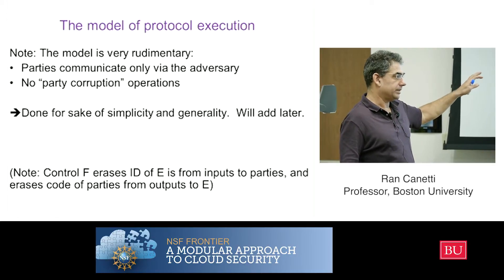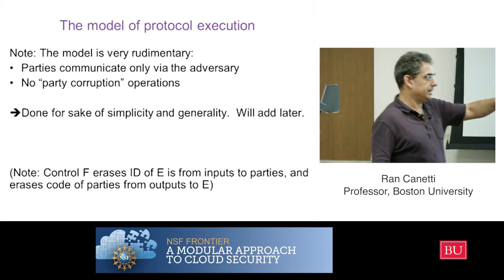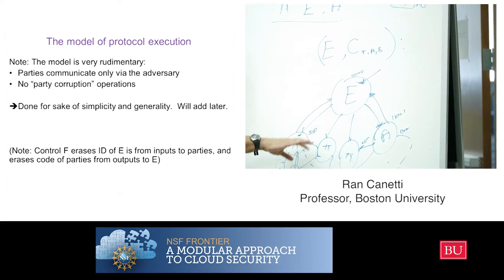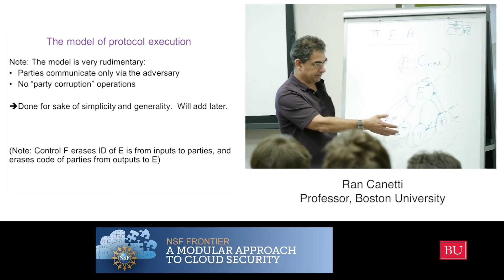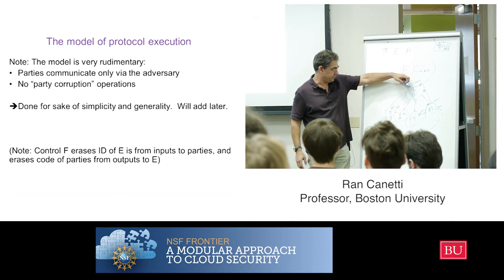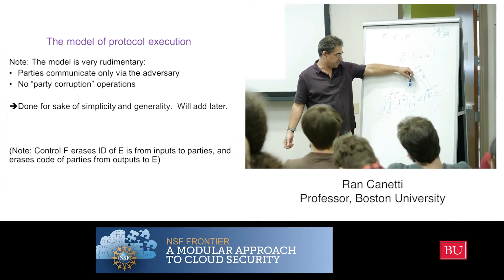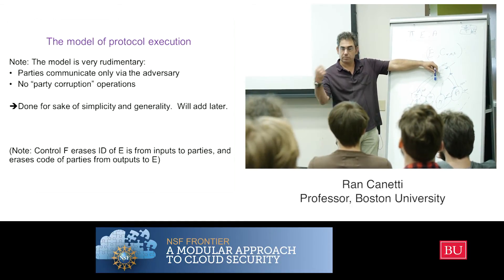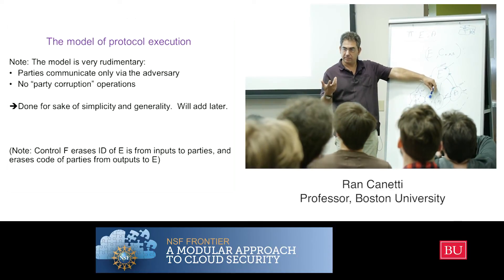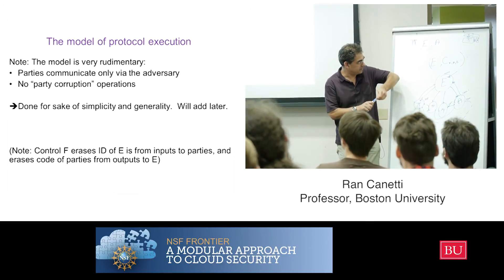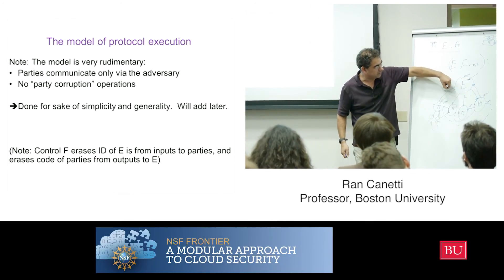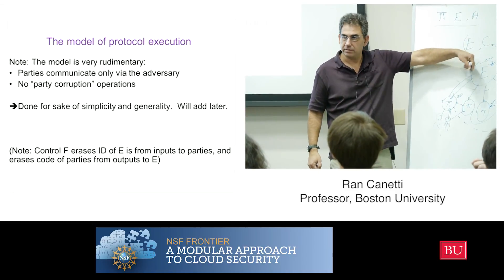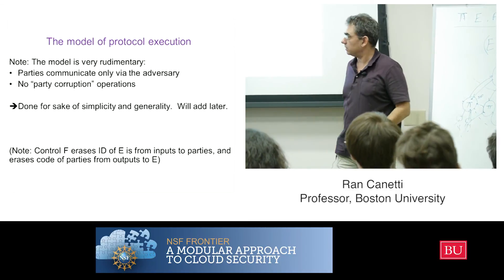One quick thing I have to add: in a minute I'm going to talk about emulation — I'll want to say the environment doesn't know whether it's talking to these parties or some other parties, because one protocol emulates another. So I need a mechanism to allow that. Right now the environment writes to specific machines and knows who it's writing to; if a machine writes back, the environment knows who wrote. I can't just swap in different code because the environment will see the difference. So in those links between the environment and the parties, I need to be able to change the identities in a technical way, and the control function will handle that when switching from one protocol to another. It's just a technicality.